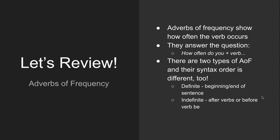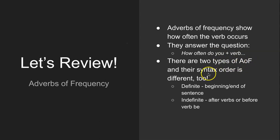In this video we learned a lot about adverbs of frequency. We learned that adverbs of frequency show how often the verb occurs — how often the action repeats — which is why we use them with the simple present tense. They answer the question 'how often.' There are two types of adverbs of frequency, and the syntax order is different for each. You need to understand the difference between definite and indefinite adverbs. Thank you for watching.